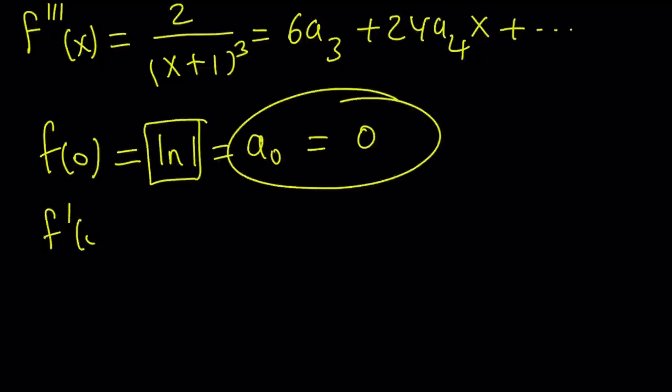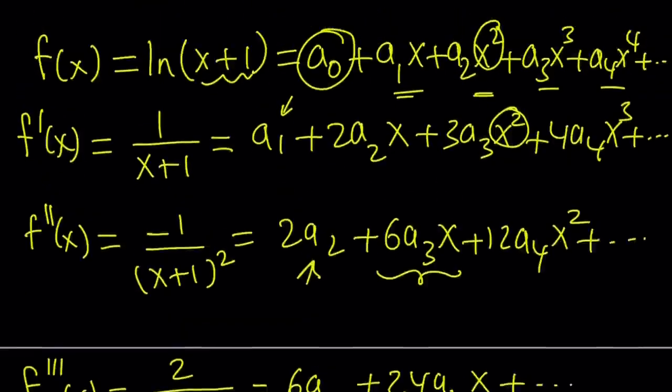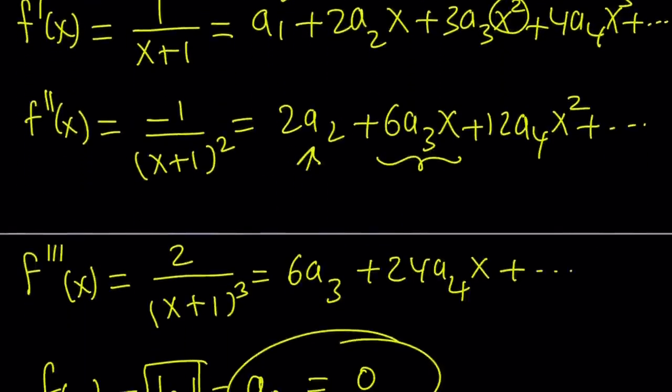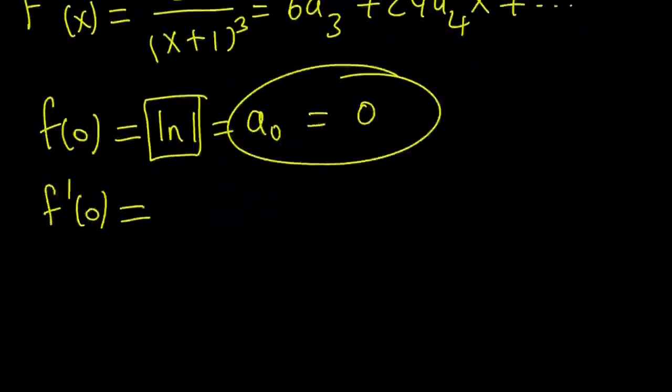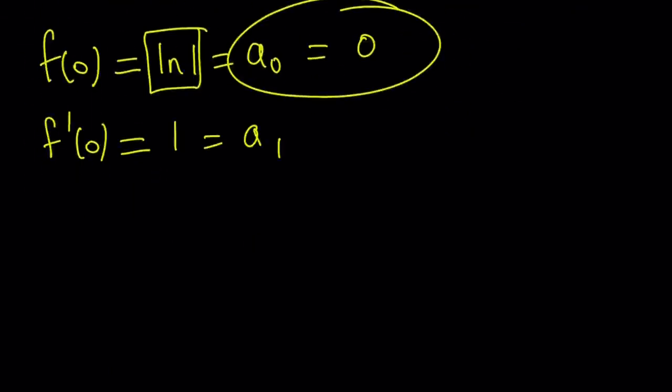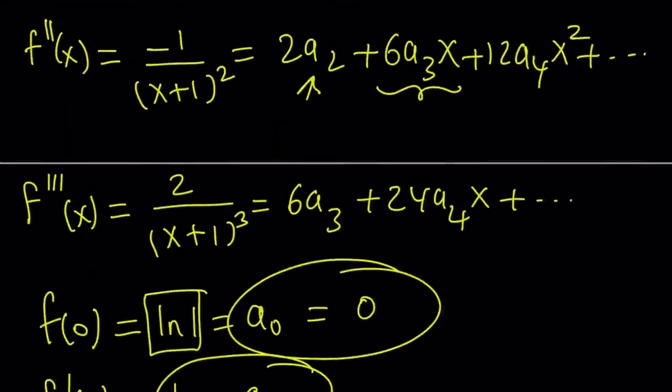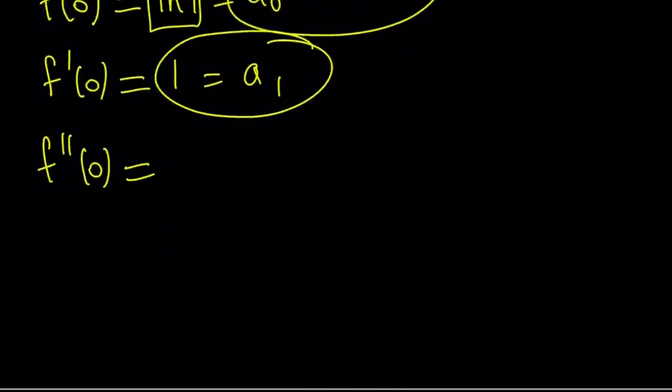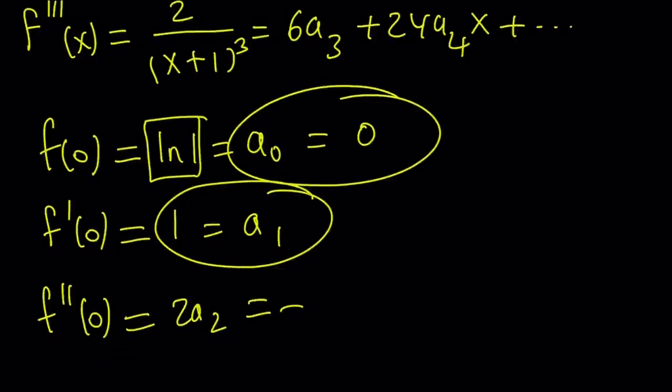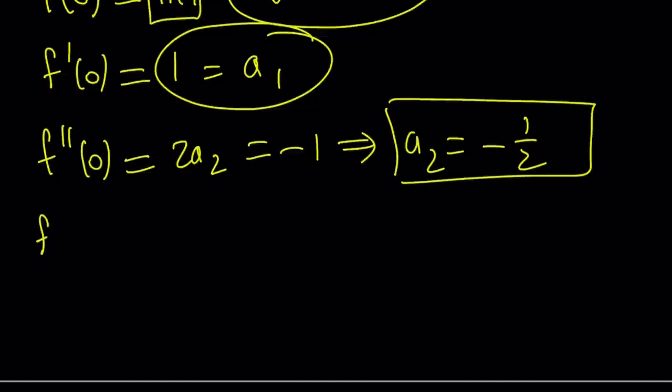If you take the first derivative and replace x with 0, on the left-hand side you get 1. On the right-hand side you get a₁. So 1 equals a₁. In the second derivative, replace x with 0 on both sides. You get negative 1 from the left-hand side, and here you get 2a₂. 2a₂ equals negative 1. So a₂ is negative 1/2.